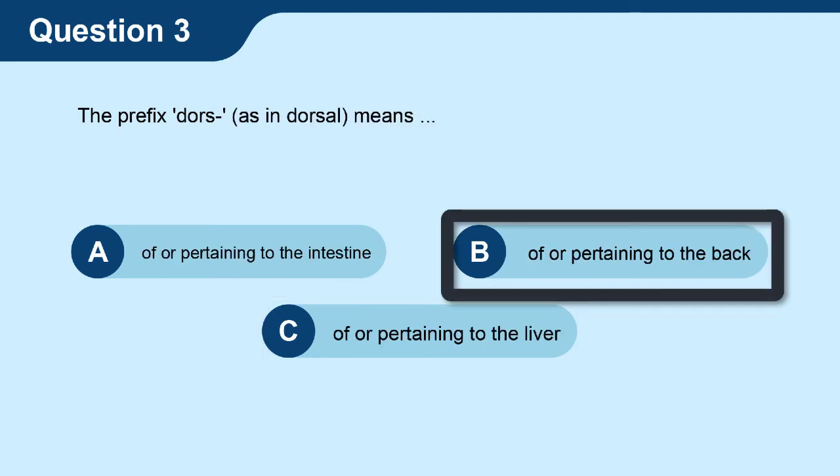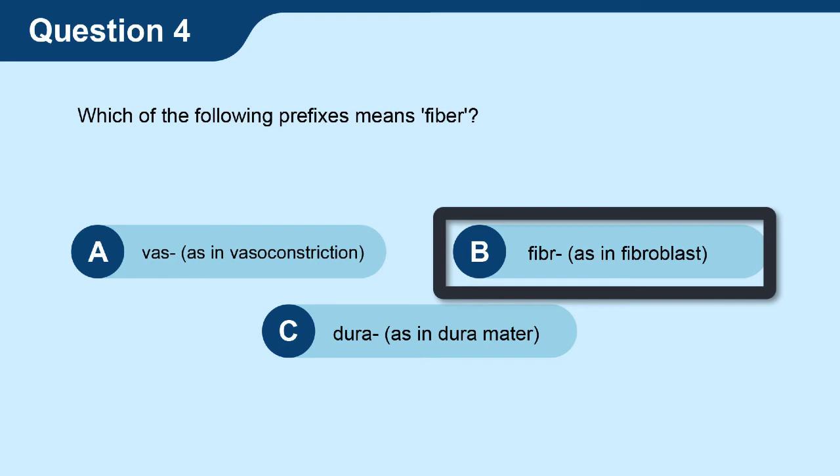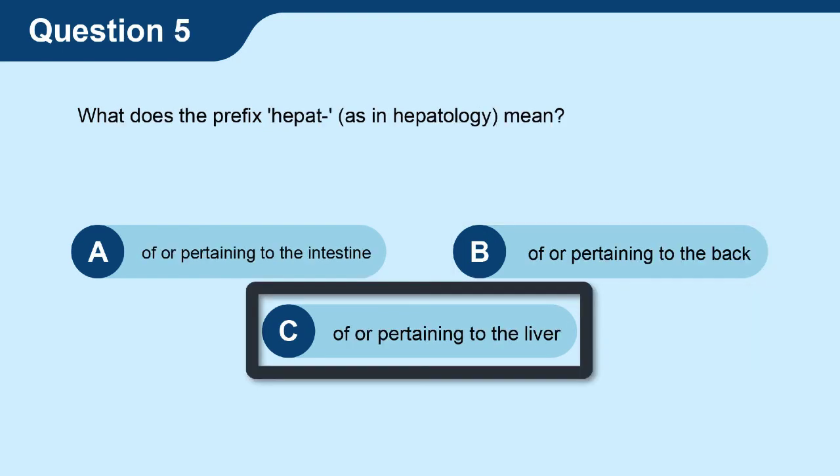Question 4, which of the following prefixes means fiber? The answer is B, fibr as in fibroblast. Question 5, what does the prefix hepat as in hepatology mean? The answer is C, of or pertaining to the liver.